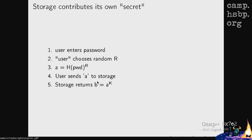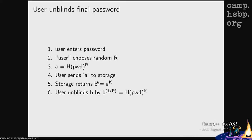The storage sends back this B value. When the user receives it, it unblinds the whole value — it takes B to the power of 1/R, which removes the blinding factor. In the end, what you get is the value of your password hashed to the power of K. K was contributed by the storage, and the password was contributed by you. This output of the Sphinx protocol is a 32-byte long completely random string, always the same for the same site and the same user — a high-entropy password.